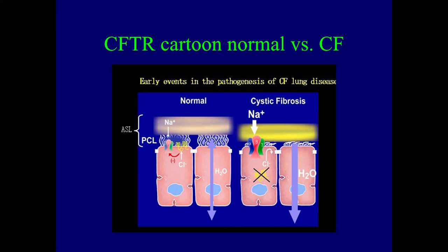In the cystic fibrosis patient, things look different. The extra cellular sodium channel is bigger because it's the functional channel. You can see chloride is not able to get out because the CFTR protein (shown in yellow) has a big X on it and it's not working correctly. As a result, water isn't coming out, and the layer that's supposed to be the PCL is now squeezed by the mucus on top of it, and there's not enough fluid in this area — you have a thicker, dehydrated situation at the airway surface.